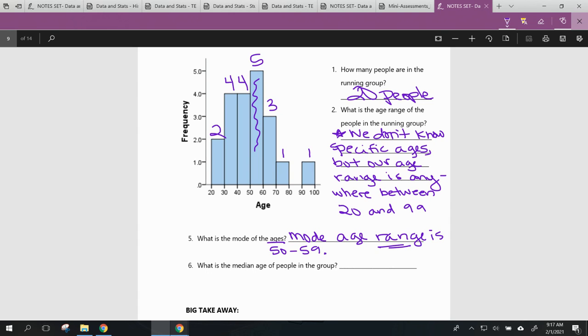Our next one, what is the median age of people in the group? Well, on this one, if they're really wanting an age, we can't truly answer it because we don't know specifics. So we might say, can't be determined from this graph.